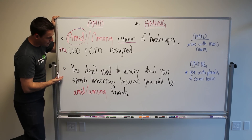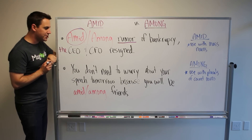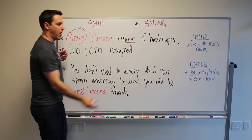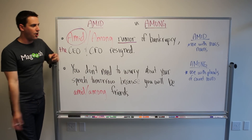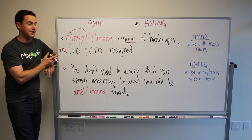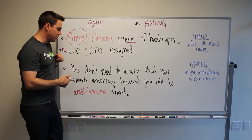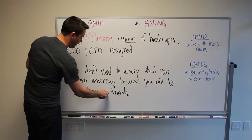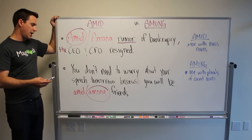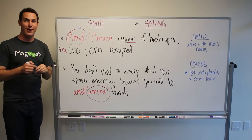Our next sentence: 'You don't need to worry about your speech tomorrow, because you will be amid or among friends.' As I said before, count nouns — things that you can count, nouns that you can count, like 'friends' — and the plural, we would use 'among.' So here we would use 'among': 'You don't need to worry about your speech tomorrow, because you will be among friends.'